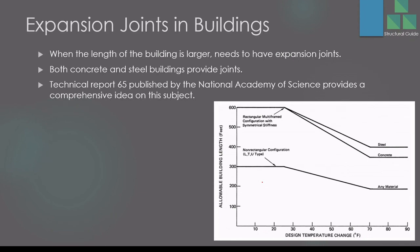The final type of expansion joint discussed today is the building expansion joint for long buildings. When the length of a building is too long, expansion or creep effects can cause additional stresses, leading to cracking. It is very difficult to predict exactly where cracking will occur, therefore providing expansion joints minimizes these effects and allows controlled movement of the structure.